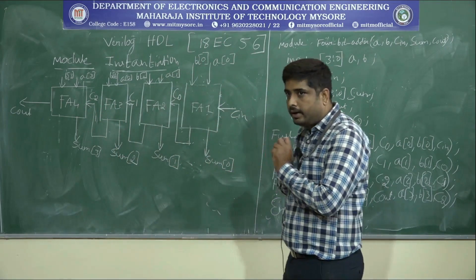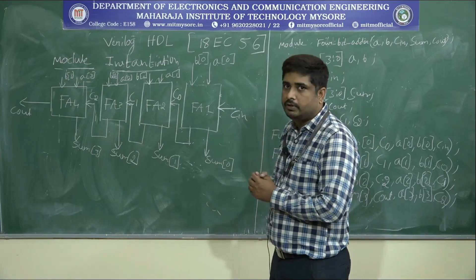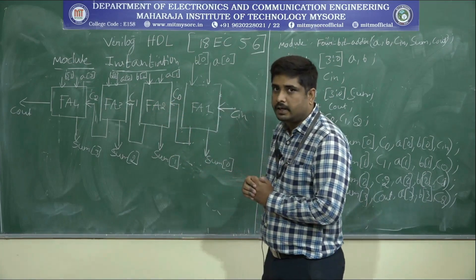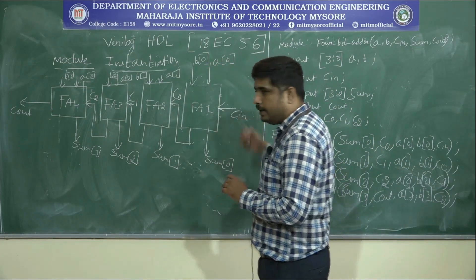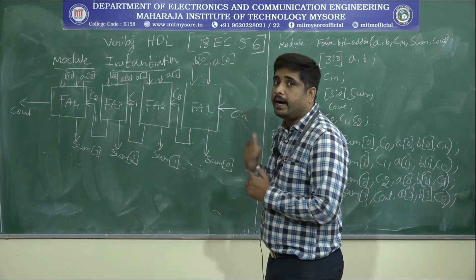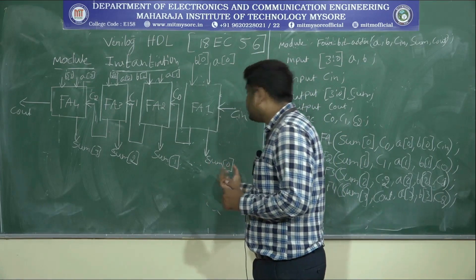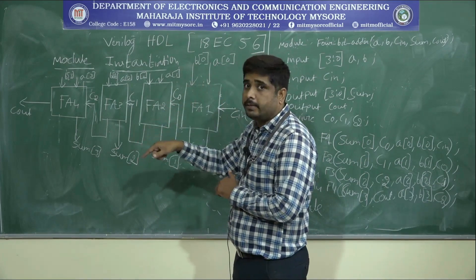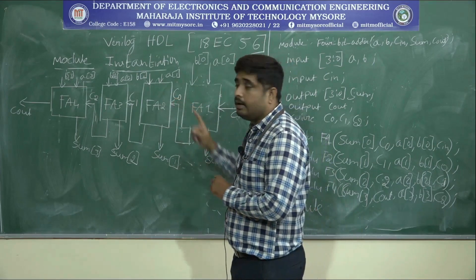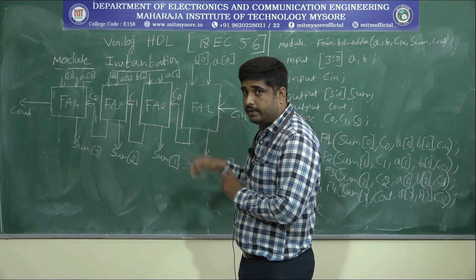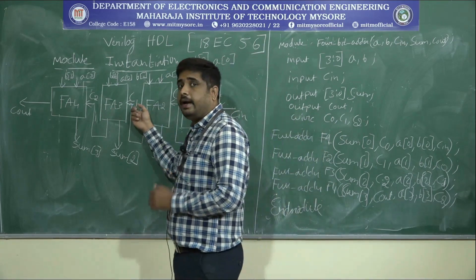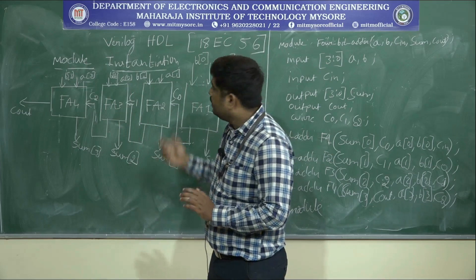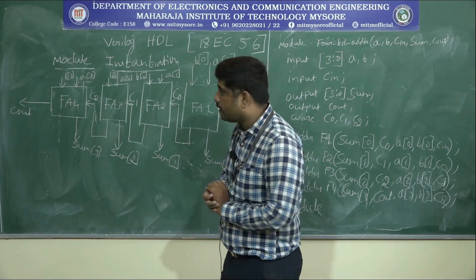Based on this diagram, we write the module instantiation. There are three intermediate signals to consider: C0 is the intermediate carry of the first stage, C1 is the intermediate carry of the second stage, and C2 is the intermediate carry of the third stage. We apply A0, B0, and C_in to the first full adder, which produces Sum0 and carry C0, which feeds into the next stage.